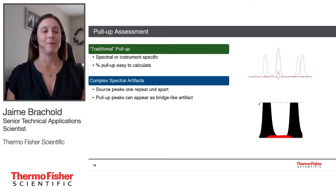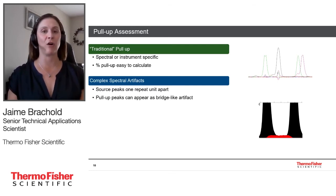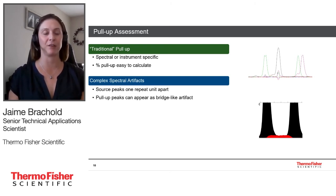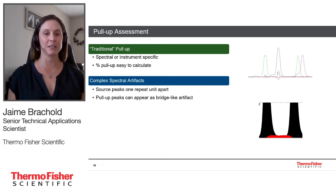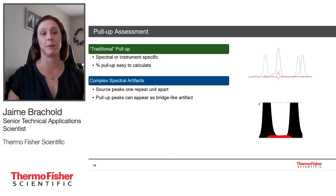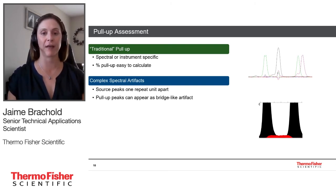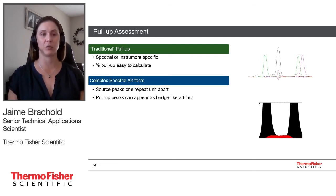I want to clarify the term 'complex spectral artifacts.' Traditional pull-up falls underneath a parent peak and has an easily calculable pull-up percentage. Complex spectral artifacts are pull-up peaks where it's more difficult to identify the parent peak, or they exhibit a bridging or pull-down effect where peaks are counted as spectral artifacts but a percentage to a parent peak cannot be calculated.